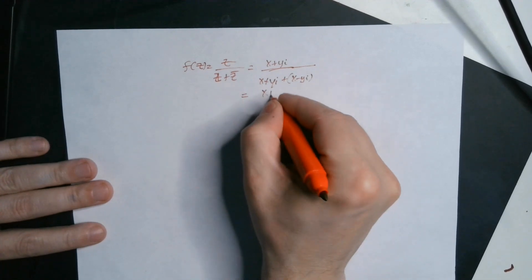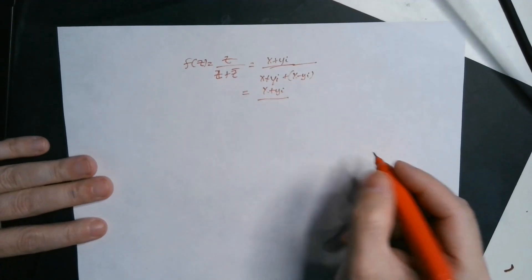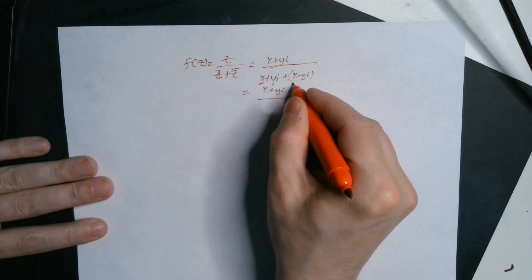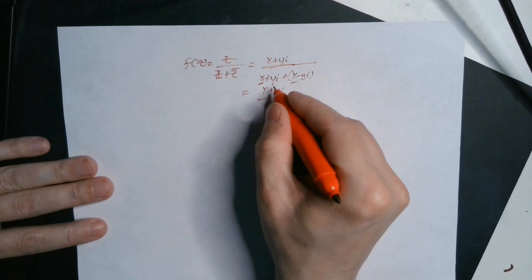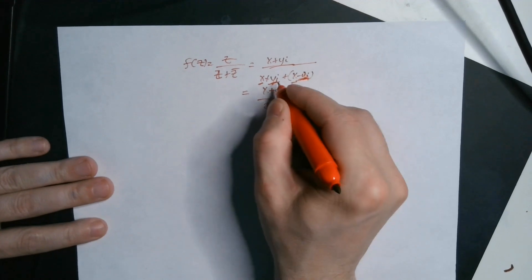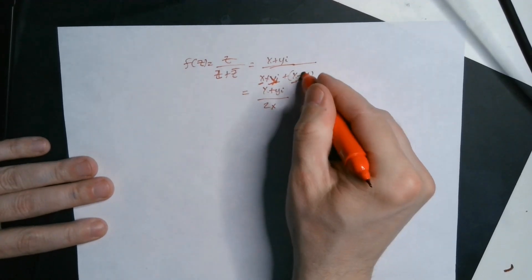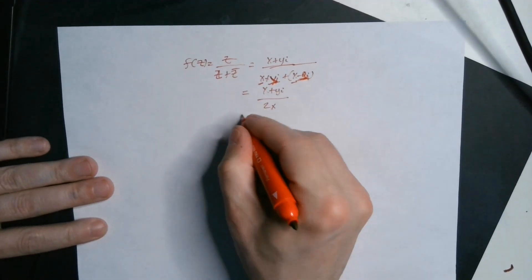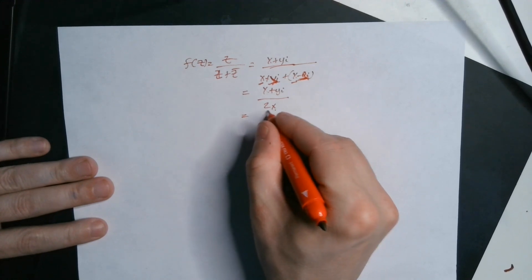Now look what happens. You copy the x plus yi part. Well, the x and the x will add up to 2x. But this is yi and this is negative yi. So this thing here cancels with that thing. See that? Canceled it. So that means all you have is 2x on the bottom left over.